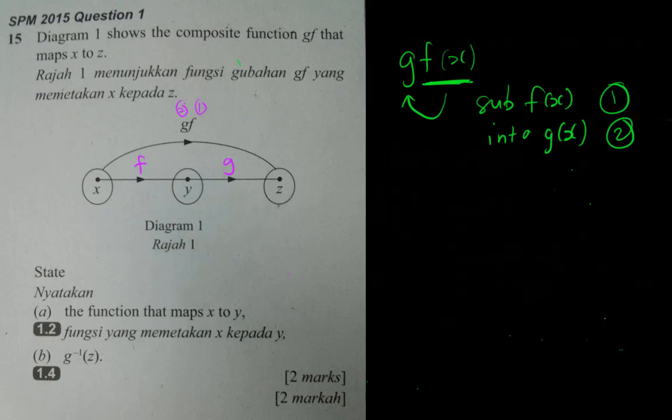If you can get the idea - because the question normally says 'state', state means you don't need to do working, you just need to write the answer. It's just one mark for each. So state the function that maps x to y - x to y, we know is f(x), so we just say f(x). Why I use x here is because this value is x. Sometimes the question can trick you - they'll say maybe this is m to y, so you have to write something like f(m).